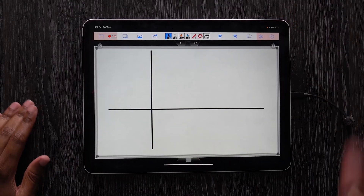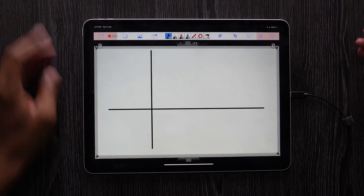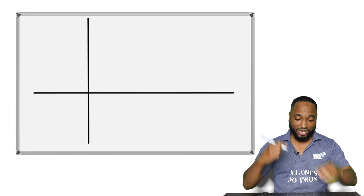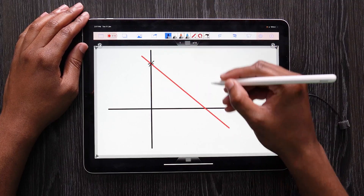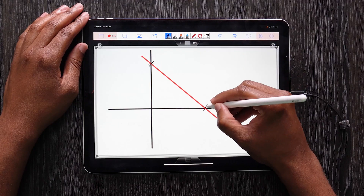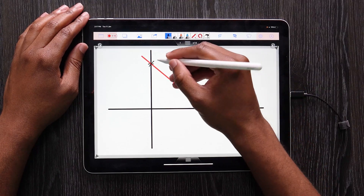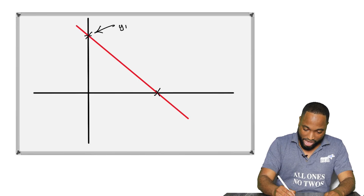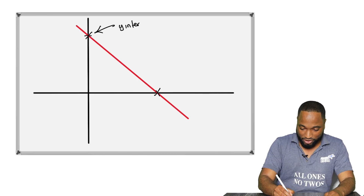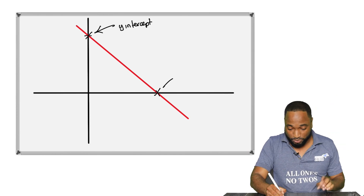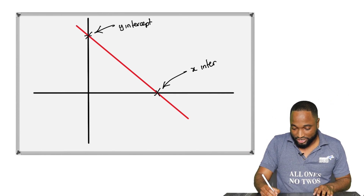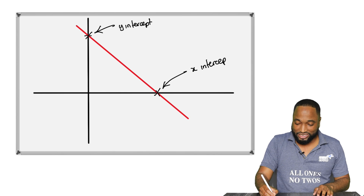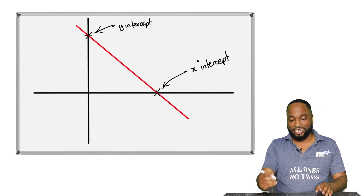Alright, 15% battery so we have to make this quick. If I draw a line like this on the Cartesian plane, it will intersect the axes at two points. This point here is called the y-intercept — we talked about it in the last video — and this point here is called the x-intercept. They are intercepting the axes at points.